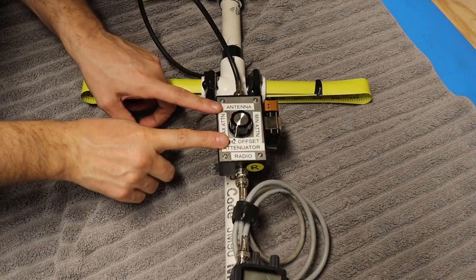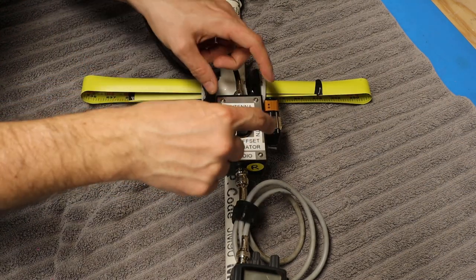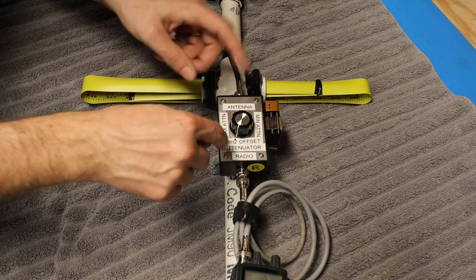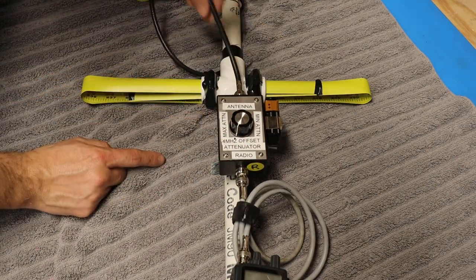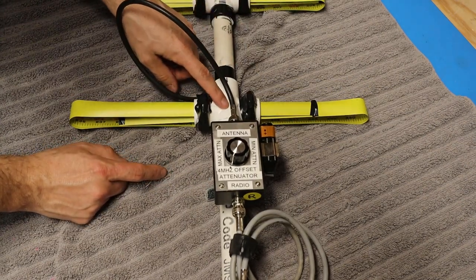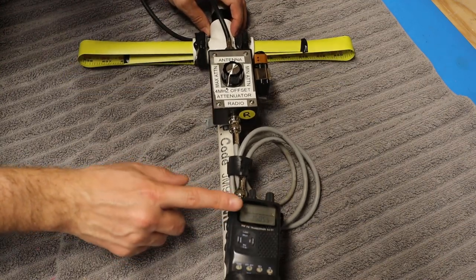Now here's a closer look at the attenuator itself. This is actually a kit that Bill put together and then mounted in this project box and labeled it up. You can see that up here, he's got a coax connection going off to the driven element of the antenna, and then on the other side is a coax connection going off to my radio.